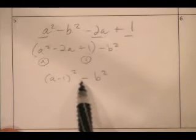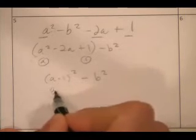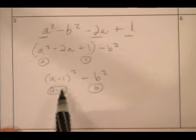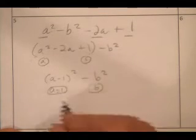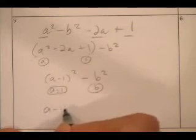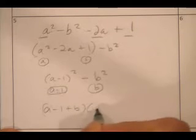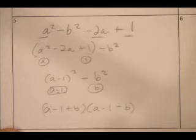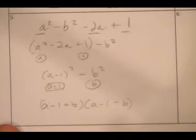That was tricky. Rearrange it and find that perfect square trinomial. Now I'm not done. I have a difference of two squares here. The square root of this guy is A minus 1. The square root of this guy is B. So it's the sum times the product of the roots. A minus 1 plus B, A minus 1 minus B. Got that guy factored.